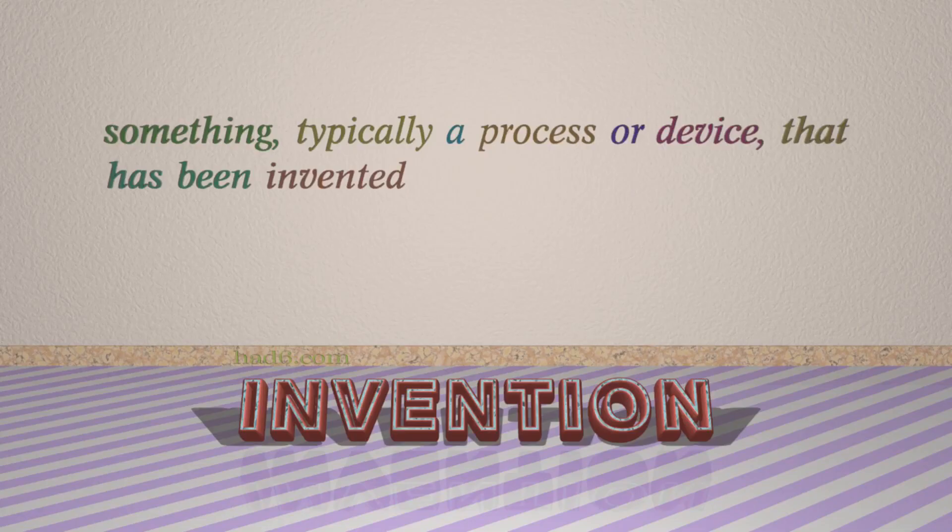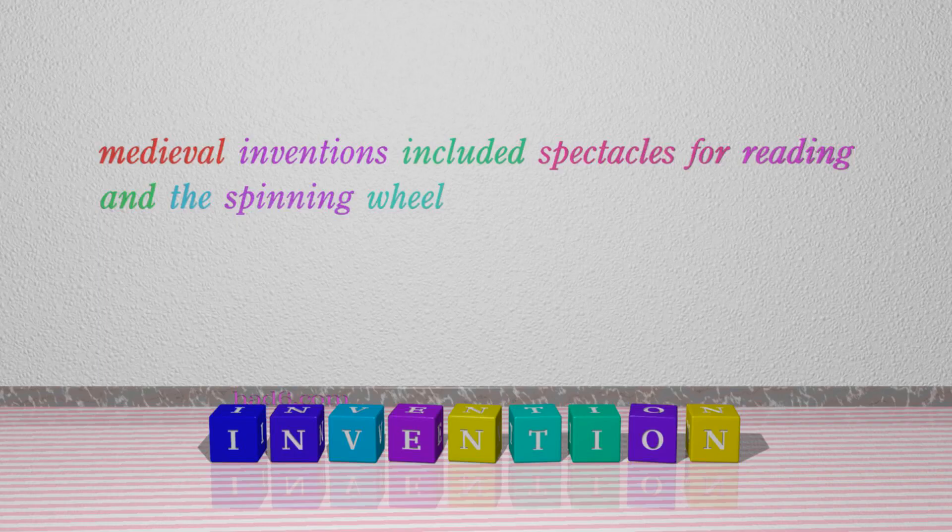Number 7: Invention, which means something, typically a process or device, that has been invented. For example: medieval inventions included spectacles for reading and the spinning wheel.